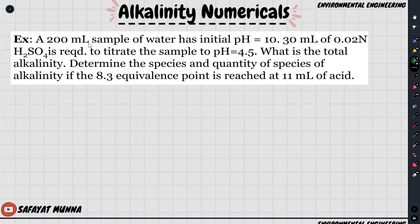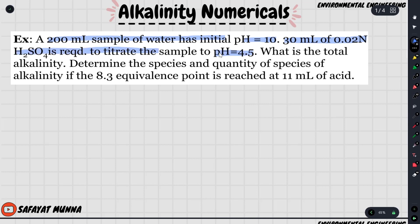In this video, we will try to find the problem. We will talk about the mathematical part and focus on it. This problem is about a 200mL sample of water with an initial pH of 10. We will add 30mL of 0.02 normal H2SO4, bringing it to a pH of 4.5.